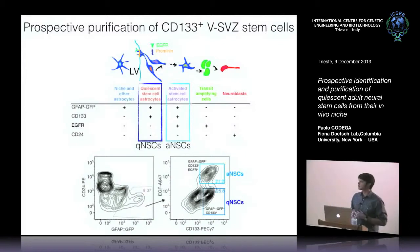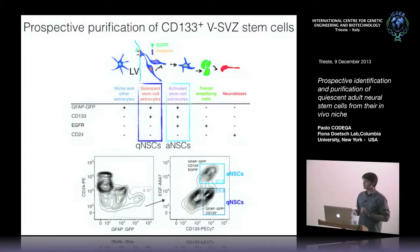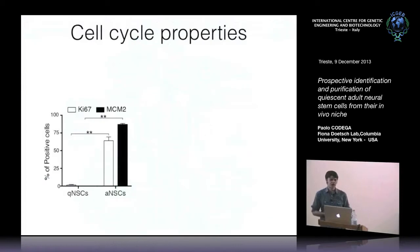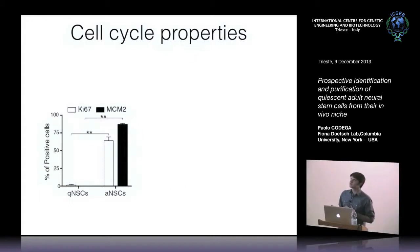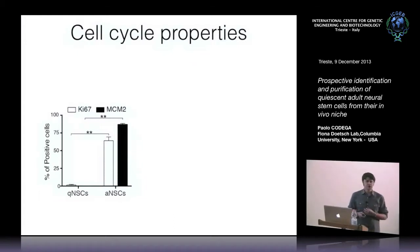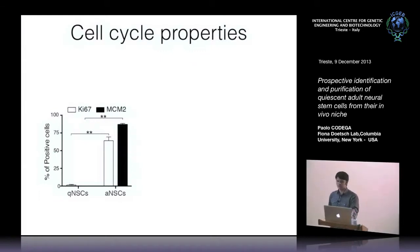By doing that, we identified two populations: one GFAP/GFP positive and CD133 positive, and another GFAP/GFP positive, CD133 and EGF receptor positive. We first looked at the cell cycle properties of these cells and found that the activated neural stem cell population was enriched in MCM2 and Ki67 — both proliferation markers — while quiescent neural stem cells lacked these proliferation markers.